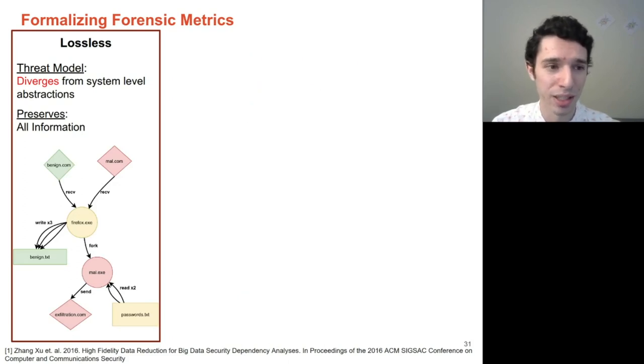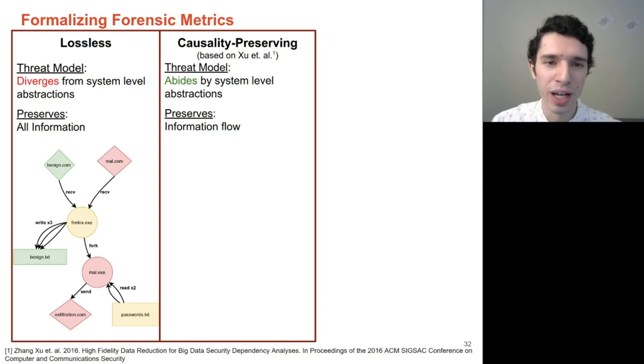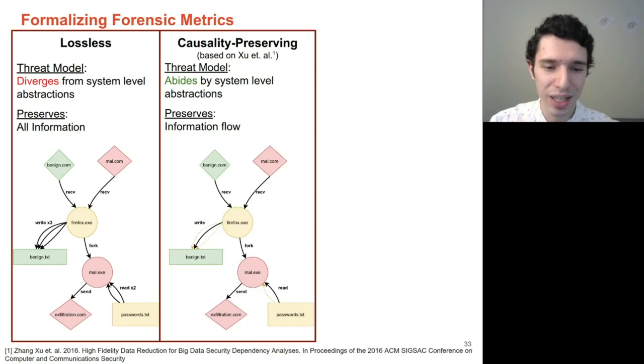However, we can relax this. If we now assume that our adversary does abide by system-level abstractions, and thus only utilize explicit modes of information between the colluding processes, then if we can guarantee that our approximated graph contains the same information flow as the original provenance graph, we can be sure that we have the same amount of forensic evidence while having the potential to achieve reduced storage spaces. More specifically, if between the source and destination of two entities there is no change in state, but there are multiple reads or multiple writes, we can collapse these into a single IO operation.